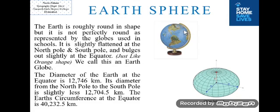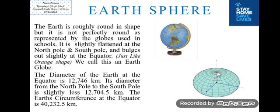The Earth is roughly round in shape, but it is not perfectly round as represented by the globes used in schools. It is slightly flattened at the North Pole and South Pole and bulges out slightly at the equator, just like an orange shape. We call this a geoid shape. The diameter of the Earth at the equator is 12,746 km, and its diameter from the North Pole to the South Pole is slightly less — 12,704.5 km — due to the flattening at the poles. The Earth's circumference at the equator is 40,232.5 km.